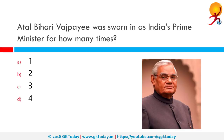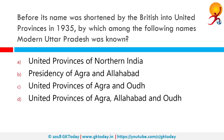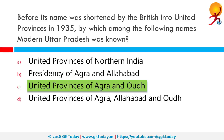Atal Bihari Vajpayee was sworn in as India's Prime Minister for how many times? His three terms were from 6th May 1996 to 1st June 1996, 19th March 1998 to 13th October 1999, and 13th October 1999 to 22nd May 2004. Before its name was shortened by the British into United Provinces in 1935, modern Uttar Pradesh was known as the United Provinces of Agra and Oudh, which was a province of India under the British Raj existing from 1902 to 1947.